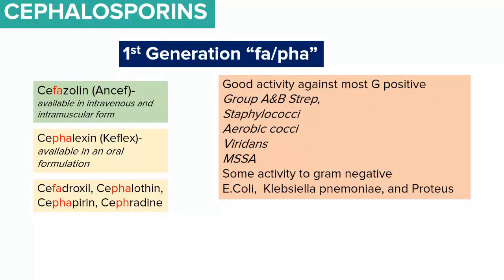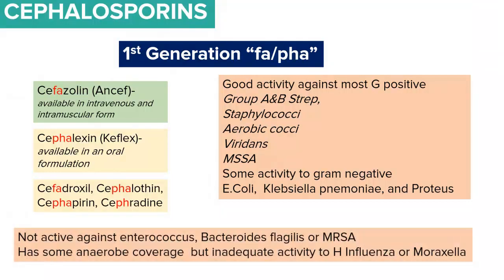The first-generation cephalosporins have good activity against most gram-positive bacteria, for example Group A and B Streptococcus, Staphylococcus, aerobic cocci, and viridans streptococci. They have some low activity against gram-negatives such as E. coli, Klebsiella pneumoniae, and Proteus mirabilis. This class is not active against Enterococcus, Bacteroides fragilis, or methicillin-resistant Staphylococcus aureus (MRSA), and has inadequate coverage against Haemophilus influenzae and Moraxella catarrhalis.